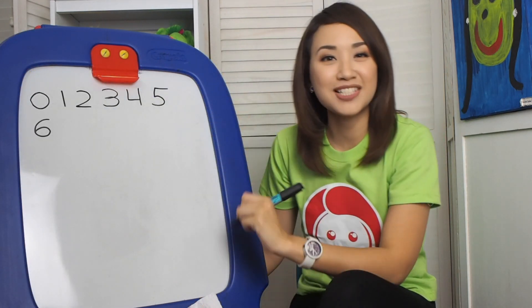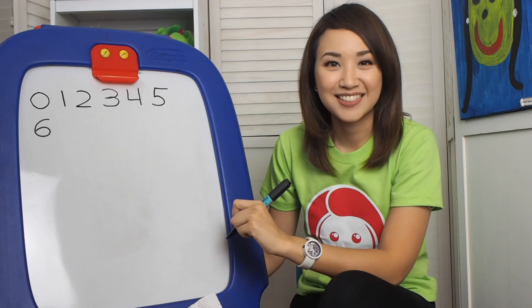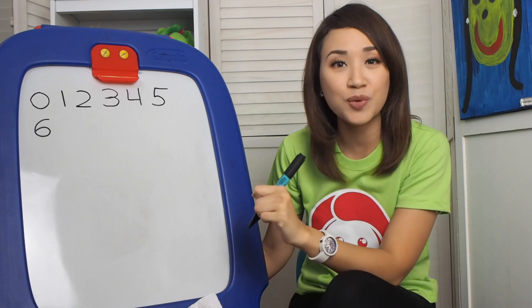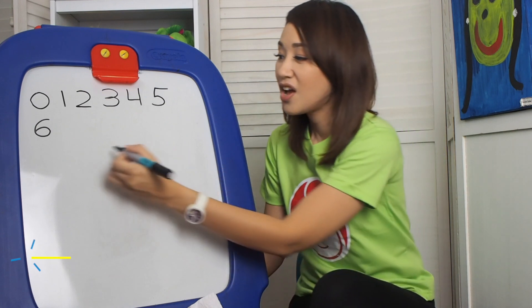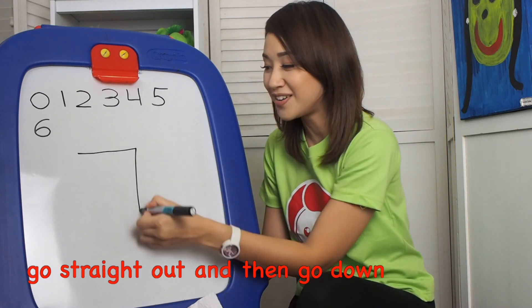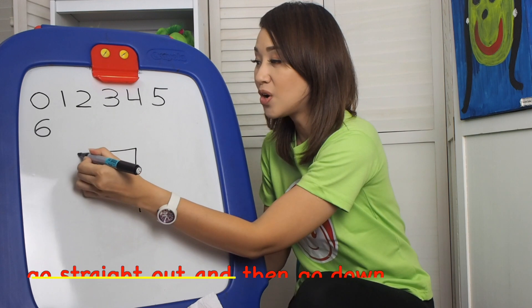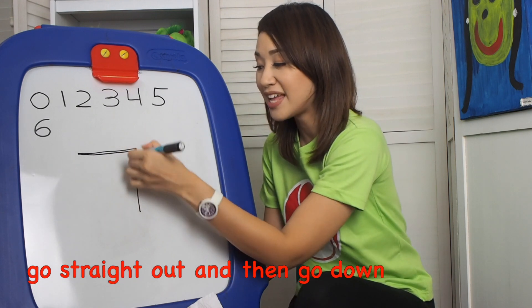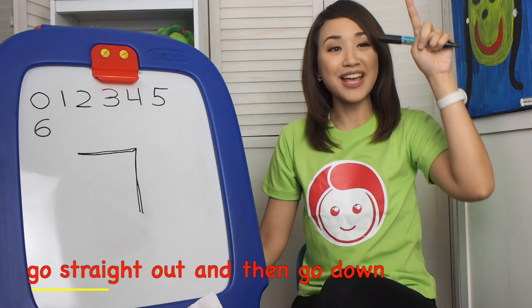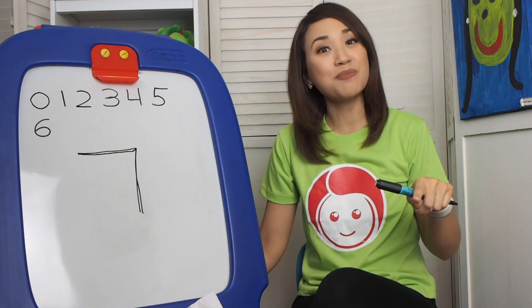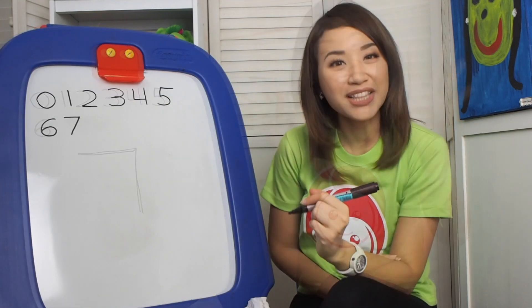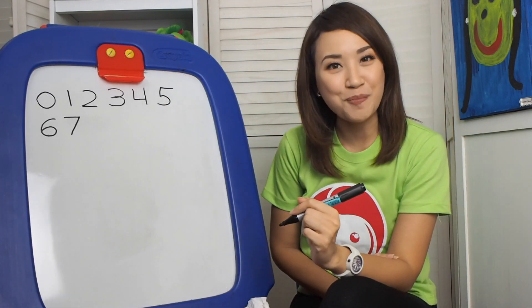What is after number 6? Very good! Number 7. So how do we write number 7? Go straight out and then go down. Go straight out and then go down to make the number 7! What is after number 7?